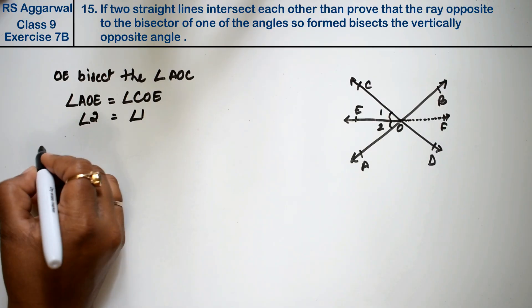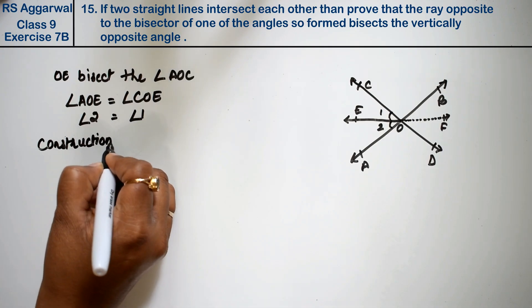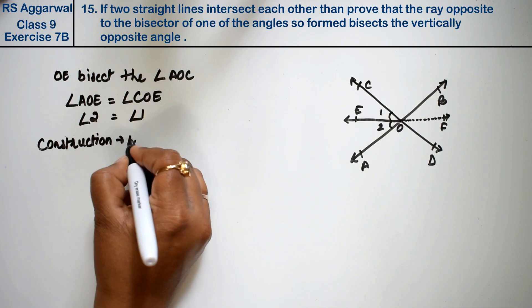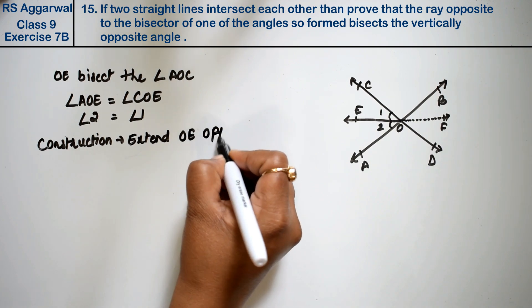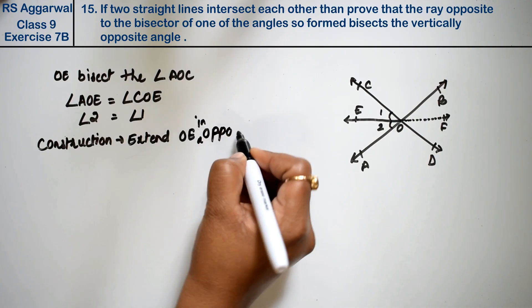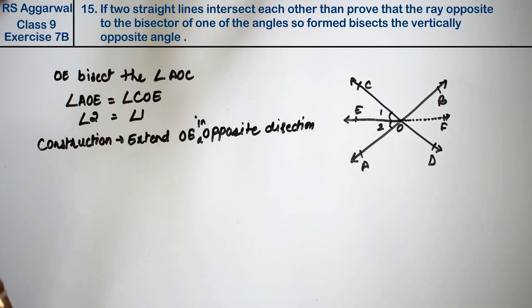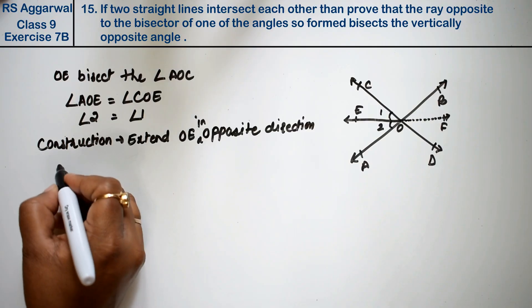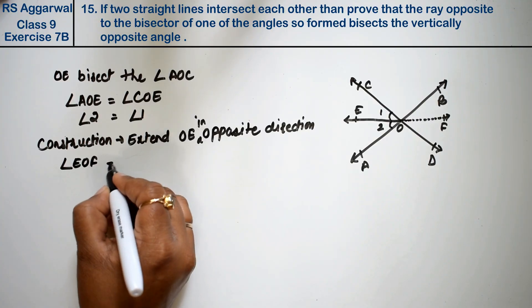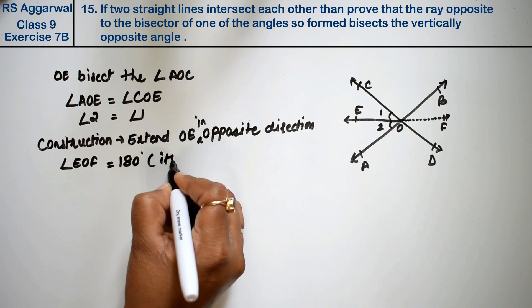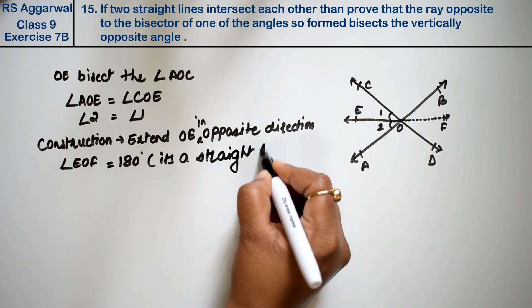Now we have construction. Extend OE in the opposite direction. Now angle EOF - what does it become? 180 degrees. Why? Because it's a straight line. This straight line is equal to 180 degrees.